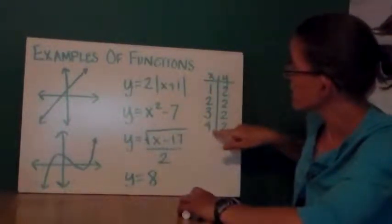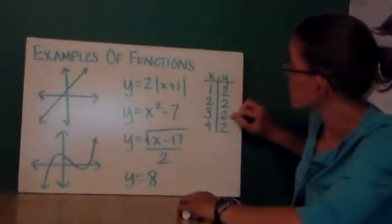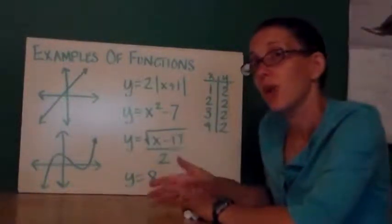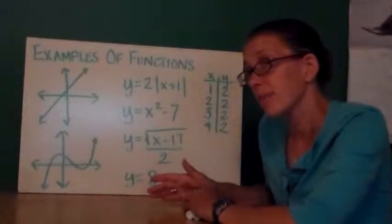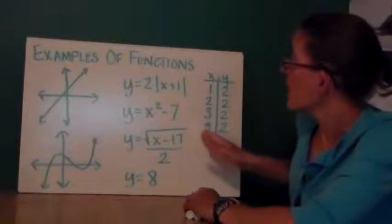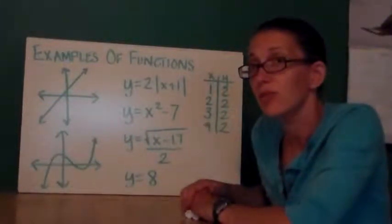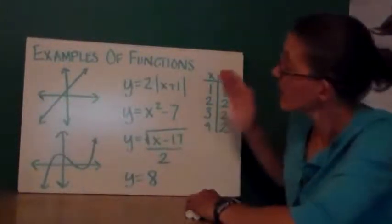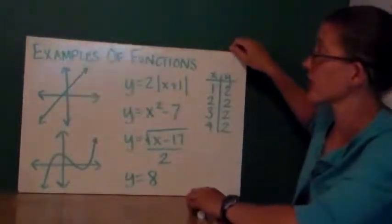I've also given this tabular example. Different numbers for x's, the y values are all the same. The y values can be all the same, they can be all different, but if you're putting in a table of values, you should never have an x value repeat with a different y value. These are all functions.